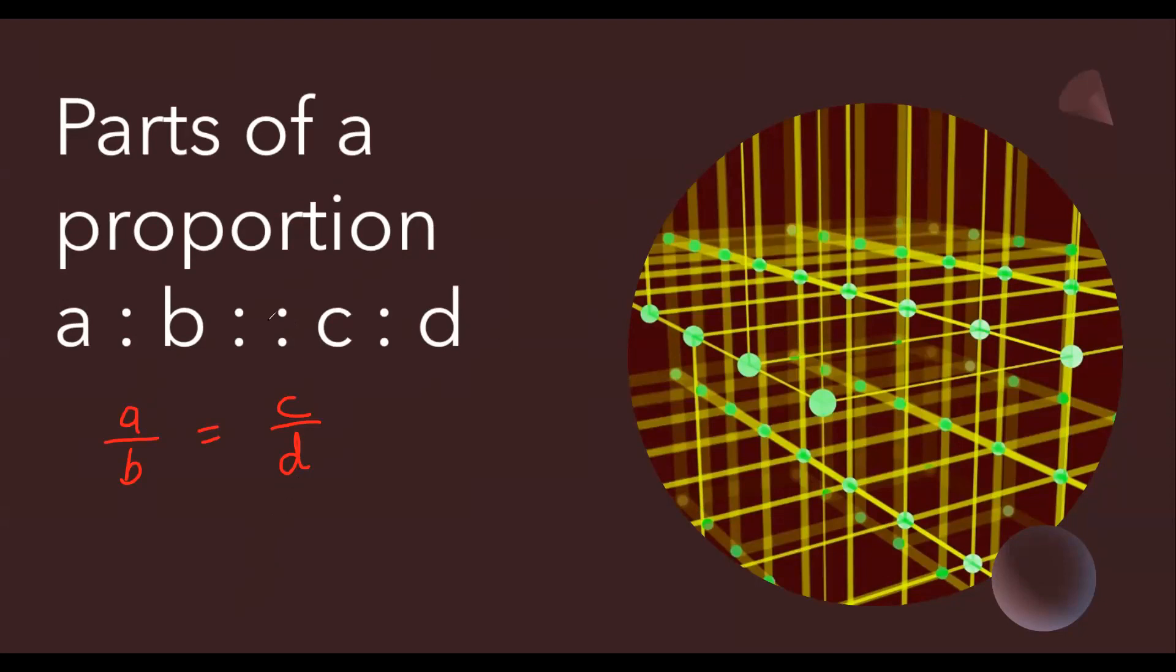In this, children, you need to know certain things. b and c, which are written on the internal side of the proportion, these are called mean proportion or mean parts. And a and d which are at the extreme ends, these are called extreme proportion.